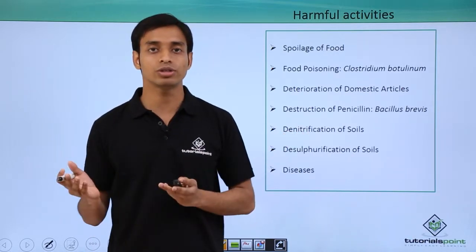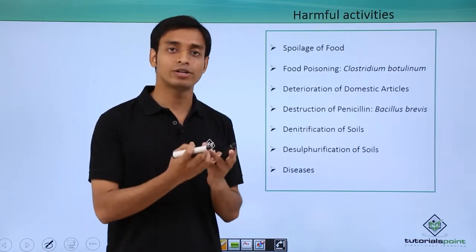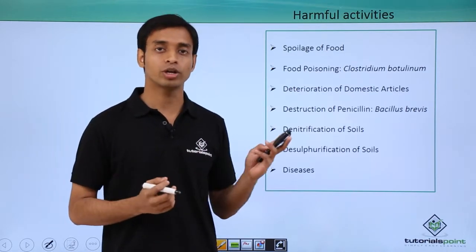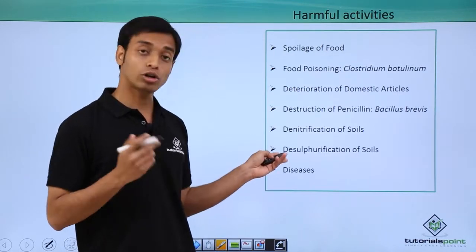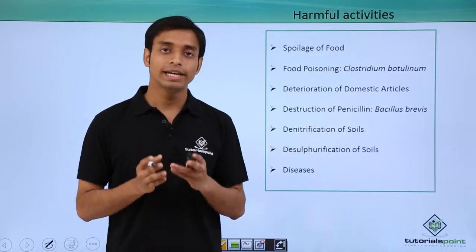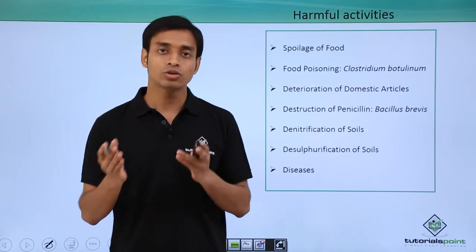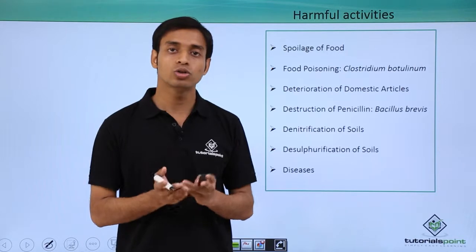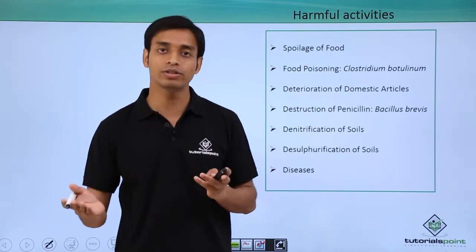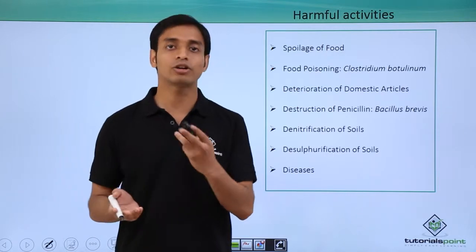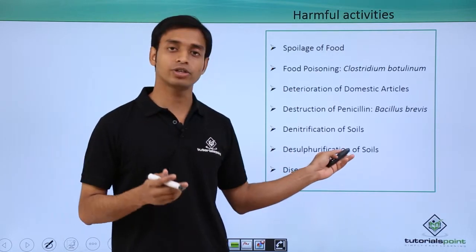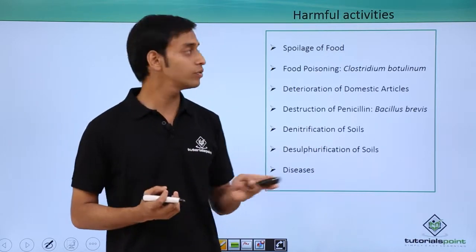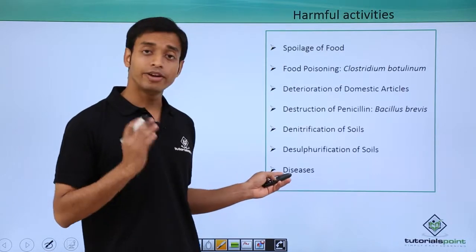However, some bacteria convert these nitrates back to gaseous nitrogen, so the proper nitrogen source in the soil deteriorates and its amount reduces because of these bacteria. Bacteria also cause desulphurification of the soil by converting sulfates to hydrogen sulfide. Hydrogen sulfide cannot be used by plants as a sulfur source, so the content of sulfur in soil reduces because of these bacteria.